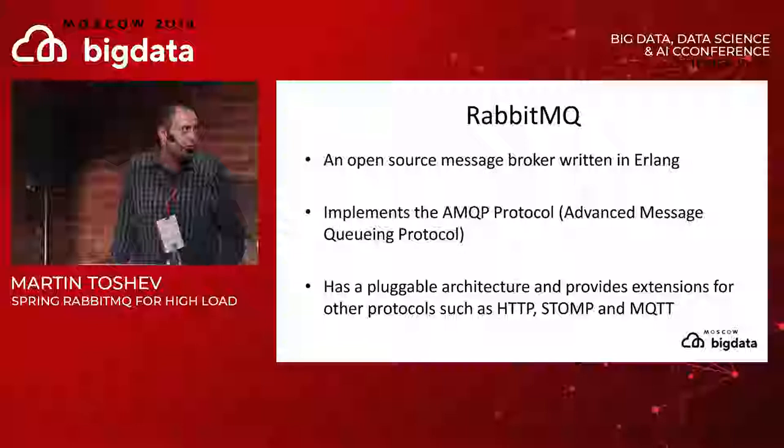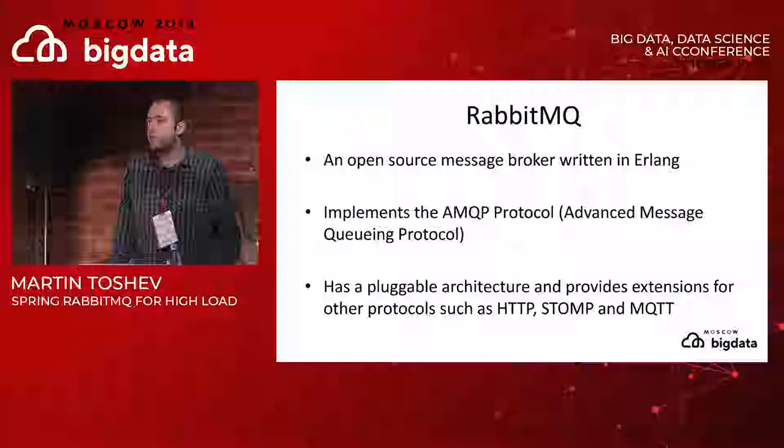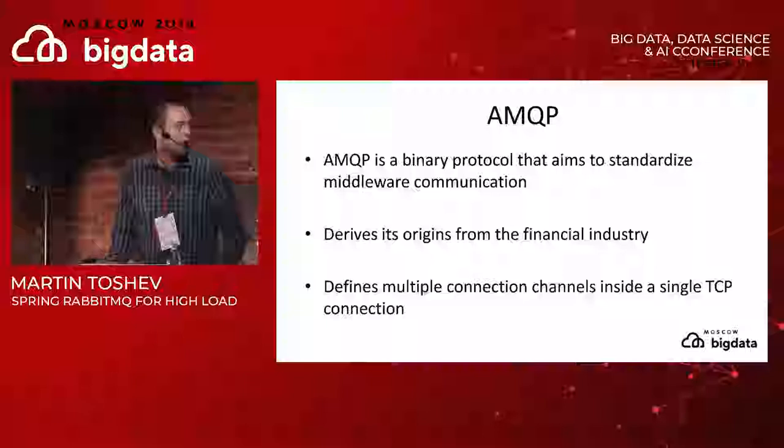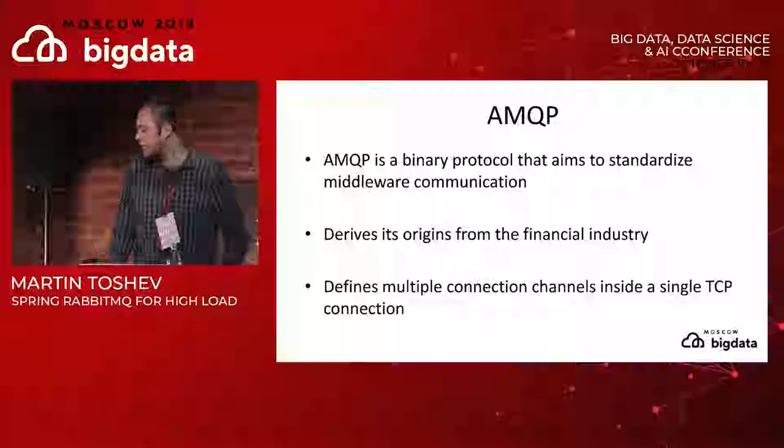The broker also has a plugin architecture, meaning it can provide support for other messaging protocols. There are currently standard plugins for STOMP, MQTT, and HTTP transfer of messages. AMQP is a binary protocol which aims to standardize middleware communication, and it derives its origins from the financial industry.